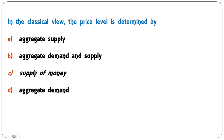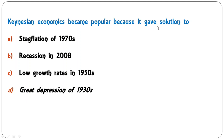Next question: in the classical view, the price level is determined by aggregate supply, aggregate demand and supply, supply of money, or aggregate demand? The correct answer is C — supply of money determines the price level in classical view. A similar type of question was also included earlier in this MCQ series.